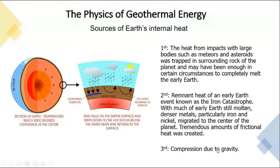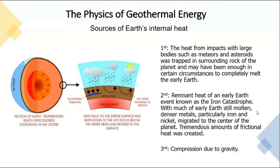This phenomenon is called the iron catastrophe. It is basically theoretical and not proven, but it describes how frictional force converts into the form of heat, which becomes embedded in the earth and then comes out. The third reason is the compression due to gravity — the gravitational pull on the inner core creates pressure, which increases and generates heat.